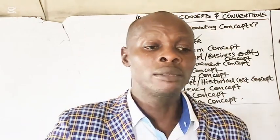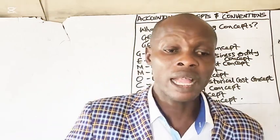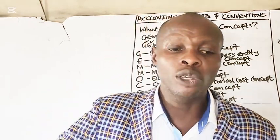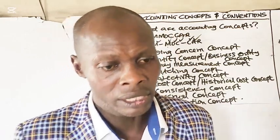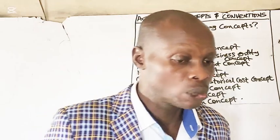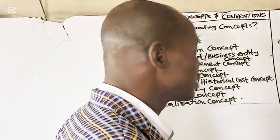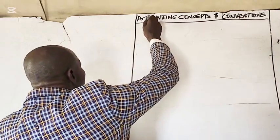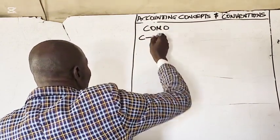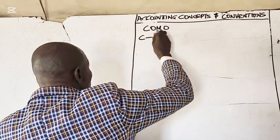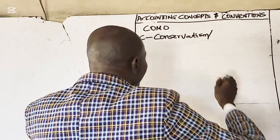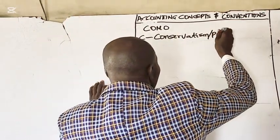What are accounting conventions? Accounting conventions are rules and practices developed over time to guide accountants. The easy mnemonic for accounting conventions is KUMO. The first letter K stands for conservatism, also called the prudence convention.